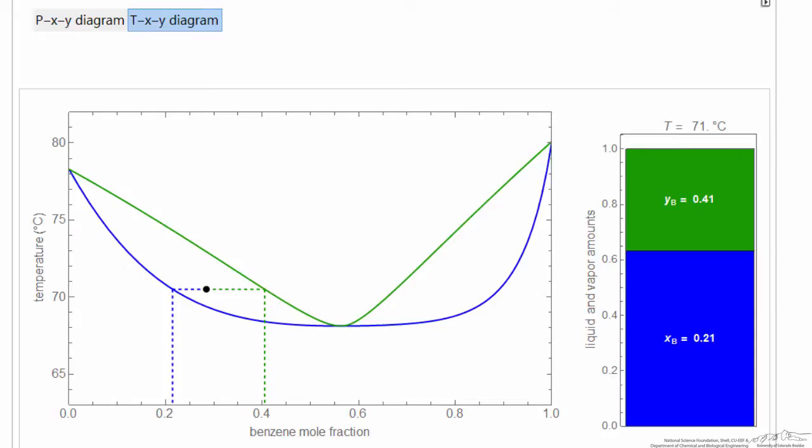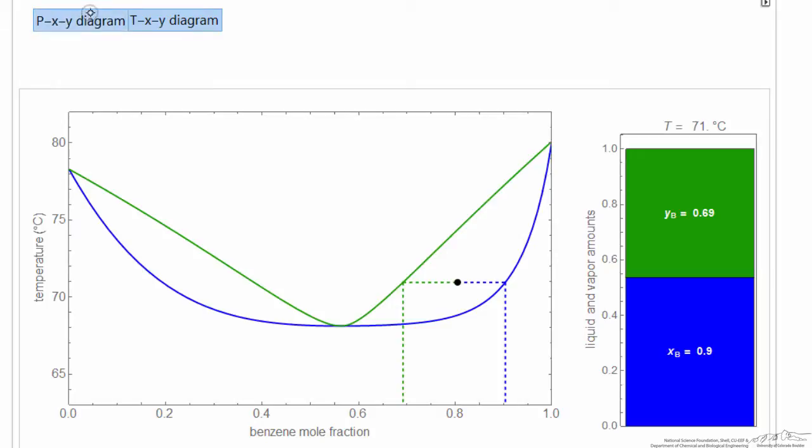Here we can see that the component enriched in the vapor phase is benzene, where here the second component is enriched in the vapor phase. The corresponding pressure XY diagram is shown by clicking here.